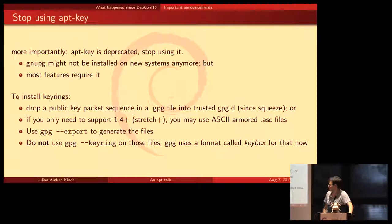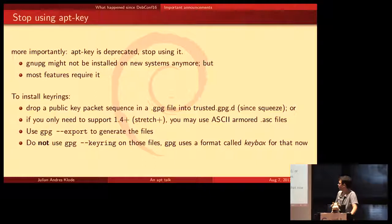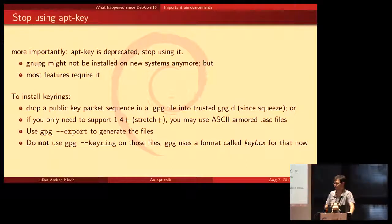What you should do instead is drop a keyring into a GPG file in the trusted.gpg.d directory, which you can do since Squeeze. Alternatively, if you only need to support Stretch and newer, you can use ASCII-armored files — just name them .asc and it will work. You can use gpg --export to generate the files. Previously people used gpg --keyring, but GPG keyring switched to key box format in GPG 2.1, which is not compatible — you get completely weird errors and everything just breaks.